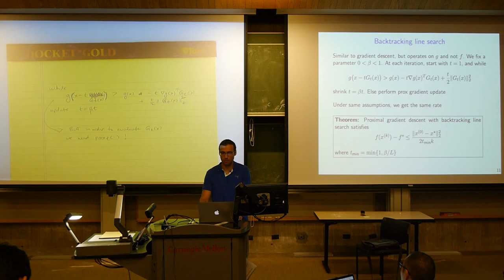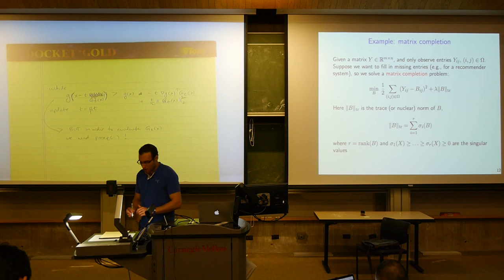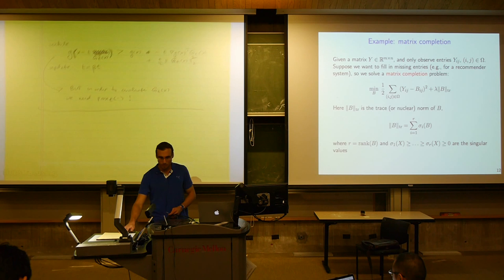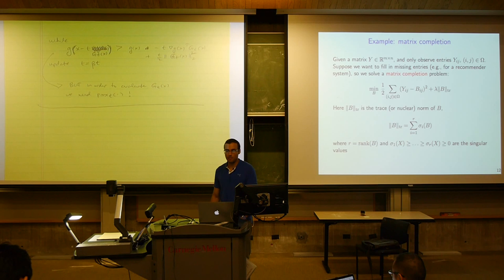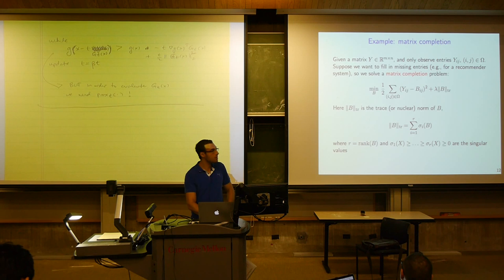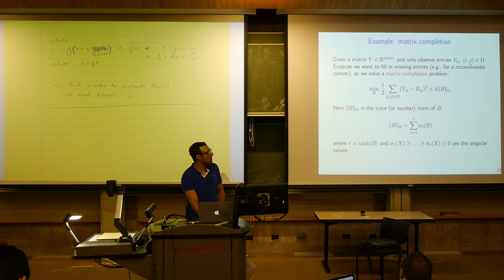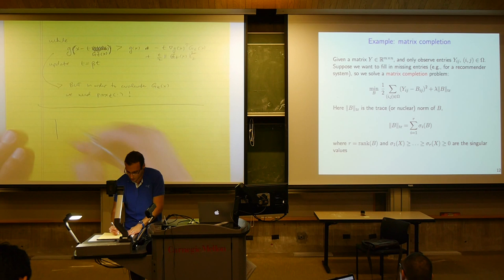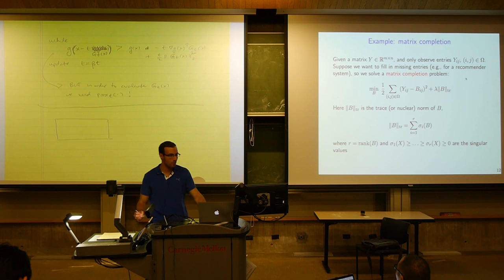Let's do an example where the prox operator is actually rather sophisticated. That's the matrix completion problem. This problem has gotten a lot of attention in the last five to eight years or so. We're given an n by n matrix and we only observe some of the entries. Let omega be the set of indices that correspond to things we actually observe. We only observe y_ij if ij is in the set omega.